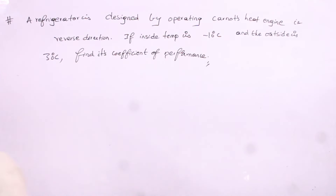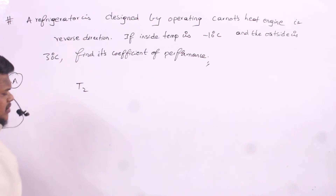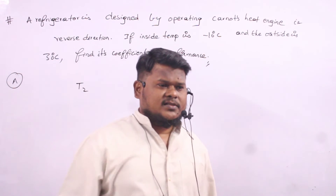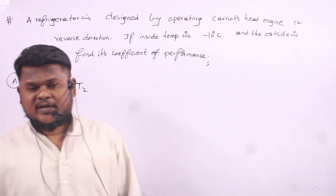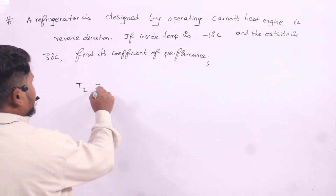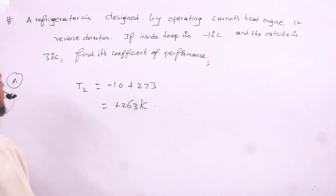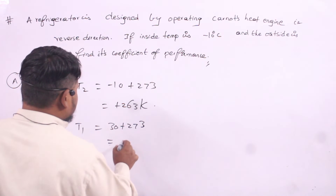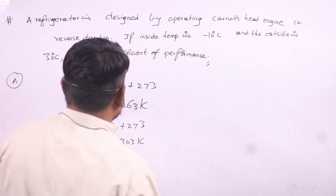Next problem: a refrigerator is designed by operating a Carnot heat engine in reverse direction — it is a reverse heat engine. The inside temperature is minus 10 degrees Celsius, which is T2 (temperature of the sink), equal to minus 10 plus 273, which is 263 Kelvin. The outside temperature is T1, equal to 30 plus 273, which is 303 Kelvin.